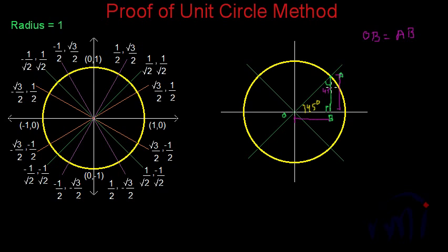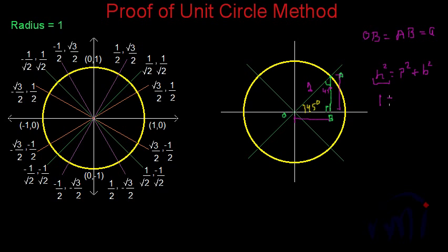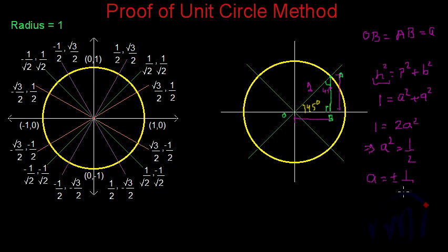Since these two angles are each 45 degrees, their opposite sides are also equal, so OA equals OB. Now we can apply the Pythagorean theorem in the right-angle triangle: hypotenuse² = perpendicular² + base². The hypotenuse is 1 because this is a unit circle with radius equal to 1. So 1 = A² + A², which gives 1 = 2A², therefore A² = 1/2 and A = ±1/√2. Since this point is in the first quadrant, both x and y are positive, so the coordinate of this point is (1/√2, 1/√2).